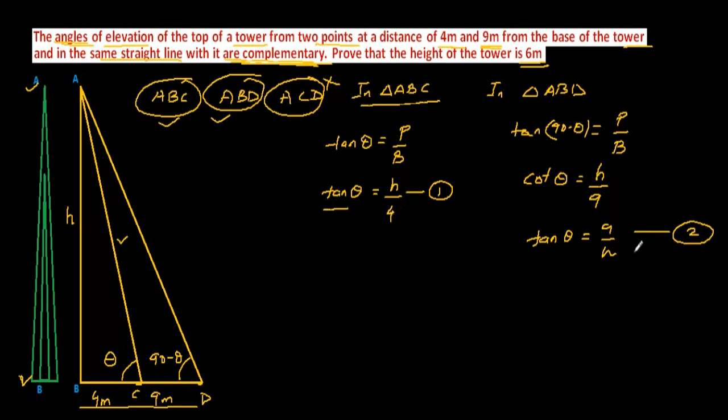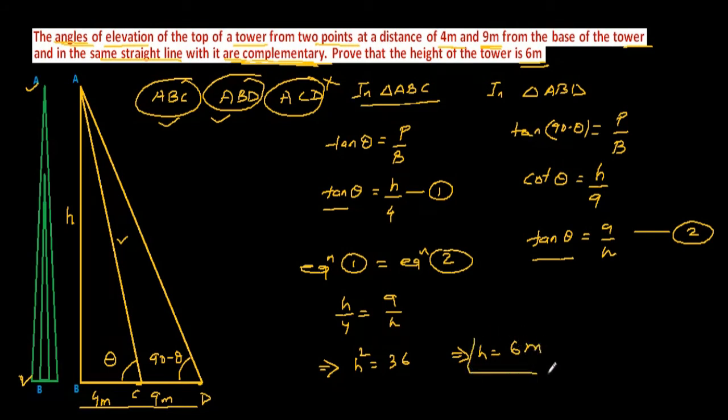So here tan theta equal to H by 4. Here tan theta equal to 9 by H. Equating equation 1 and equation 2, I am getting H by 4 equal to 9 by H. Cross multiplication will give you H square equal to 36. That means H will be equal to 6. Yes, after square root we may get negative number but height cannot be negative. That is why the height of the tower is 6 meter. Thank you.